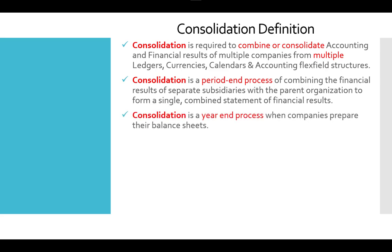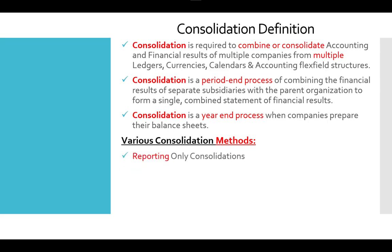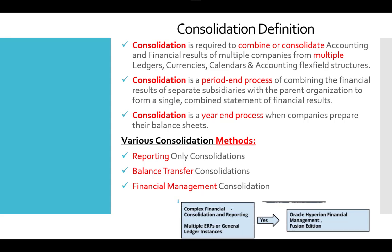Consolidation occurs when companies prepare their balance sheets. There are three types or methods of consolidation: first, reporting-only consolidation; second, balance transfer consolidation; and third, financial management consolidation. The financial management consolidation is complex — it involves multiple ERP instances, multiple General Ledger instances — and you need to consolidate between ledgers across all of these instances, often using Oracle Hyperion Financial Management (HFM) for Fusion.